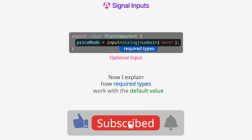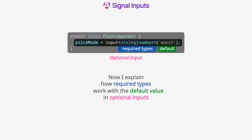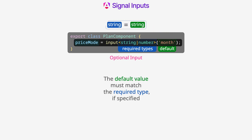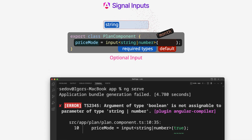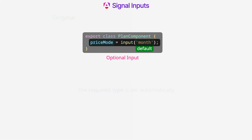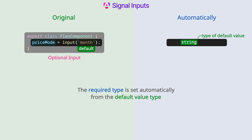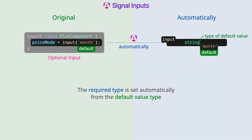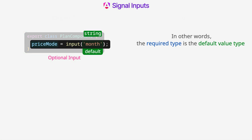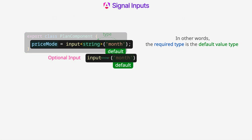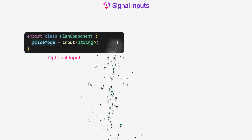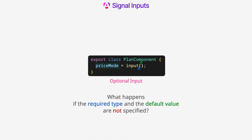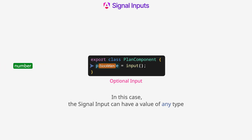Now let's look at how required types work with the default value in optional inputs. The default value must match the required type if specified. If required types are not explicitly used, the required type is set automatically from the default value type — in other words, the required type is the default value type. If neither required types nor a default value are specified, the signal input can have a value of any type.